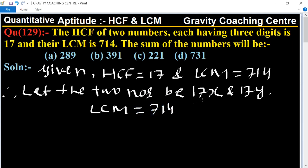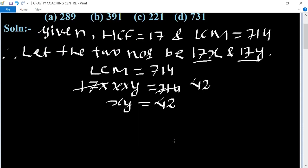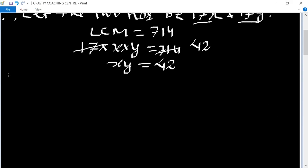LCM is given as 714, and LCM of 17x and 17y is 17 multiply x multiply y equal to 714. 714 cancel by 17, 42 times, so xy equal to 42. Now, possible pairs are: